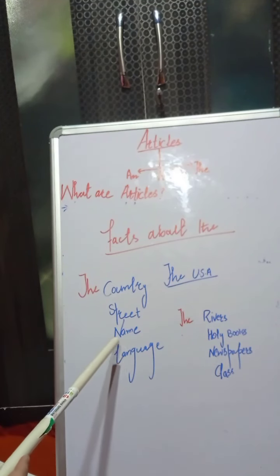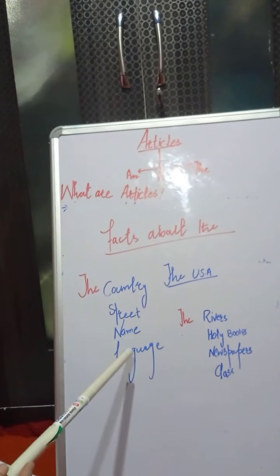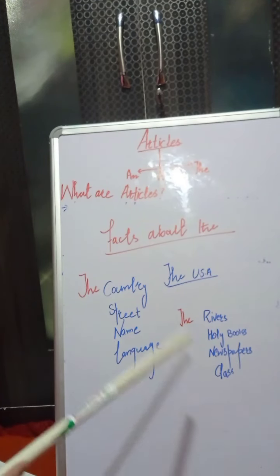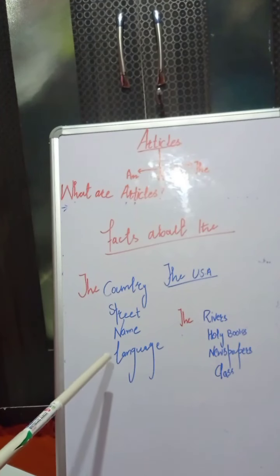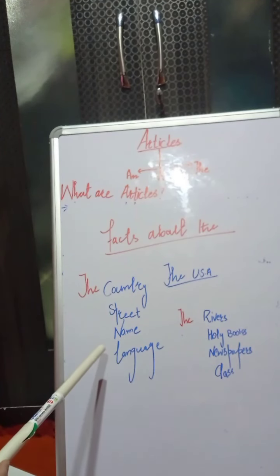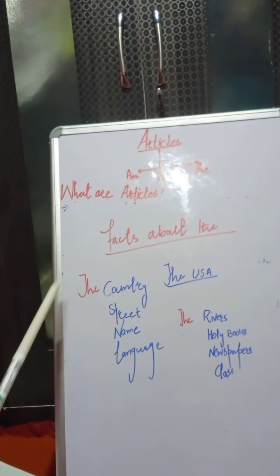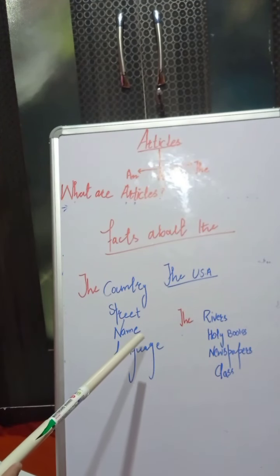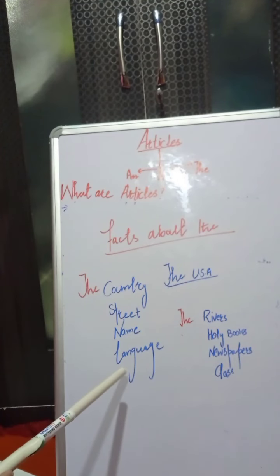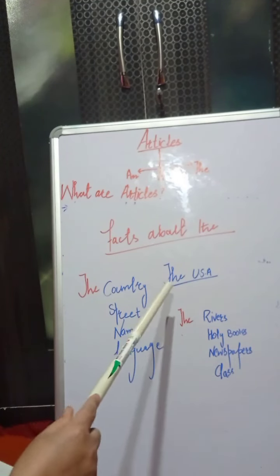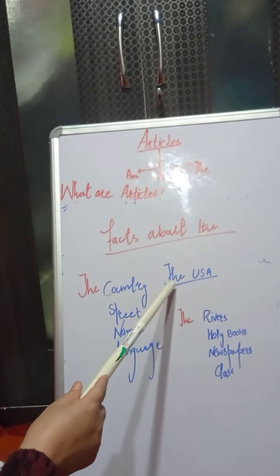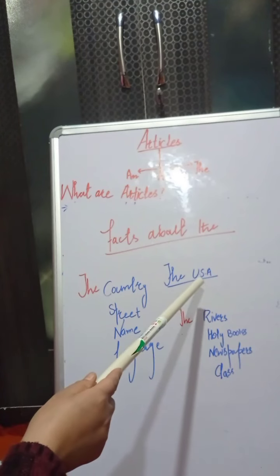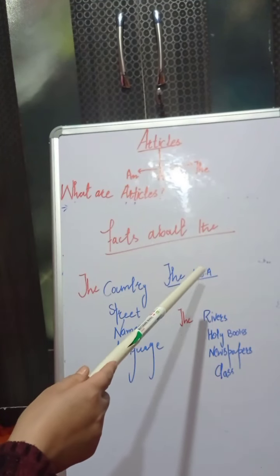'The' cannot be used before a person's name or before a language. For example, 'I speak the Urdu' or 'I speak the Hindi' is incorrect. 'My name is the Irfan' or 'My name is the Sonia' is also incorrect. However, 'the USA' is correct because the USA is a group of countries.